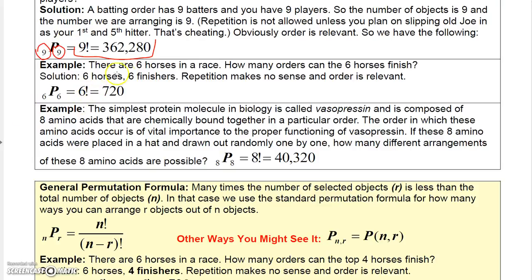Here's another example. Suppose there are six horses in a race. How many orders can the six horses finish? Since I want to know the orders of all six horses out of six horses, then order makes the order relevant. And obviously, you can't have repetition. So this would be, out of six horses, how many ways can I arrange six horses? That would be 6P6, which is 6 factorial, or 720.